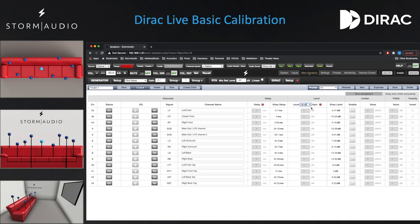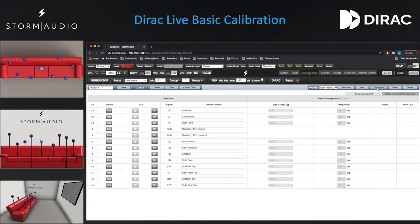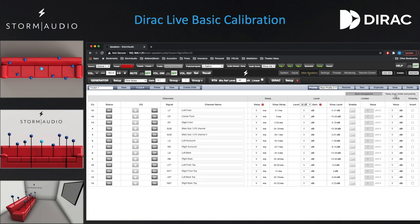It is now time to audition the system. We should use a combination of known music and cinematic content to verify the system's performance. Often you will find the desire for small fine-tuning adjustments such as level, and in some cases even delay. You can of course adjust the target curve and measurement positions in Dirac Live if you like. However, Storm Audio has a built-in trick to make this a simple adjustment for the installer. On the profile bar, select Duplicate. A new profile will be created with all of your Dirac Live calibration data, but now with further editable delay and level parameters, which will be added on top of the Dirac Live calculated coefficients.